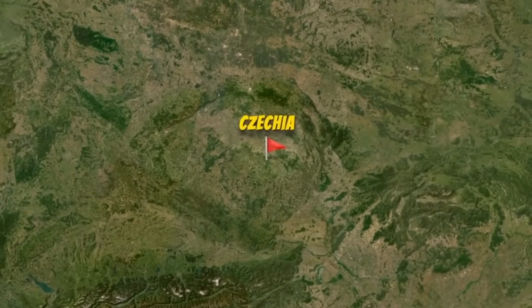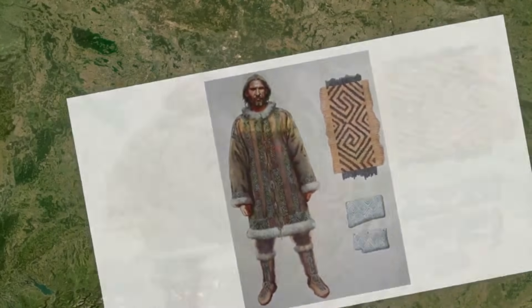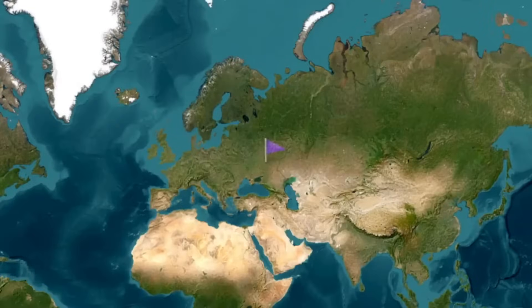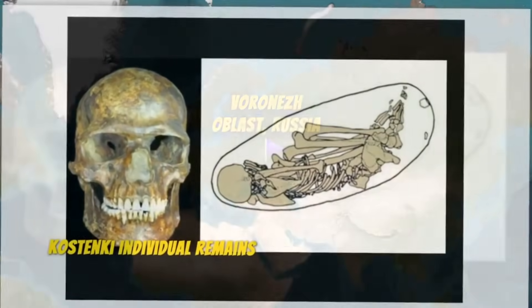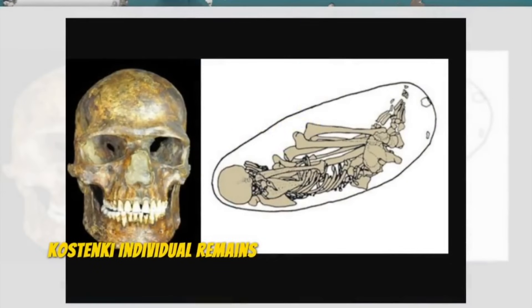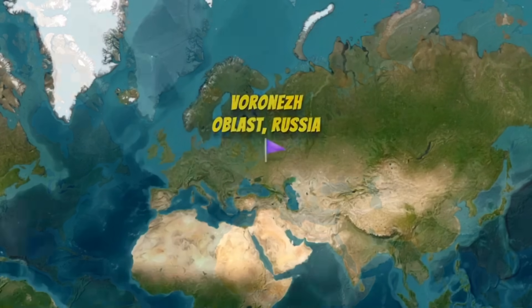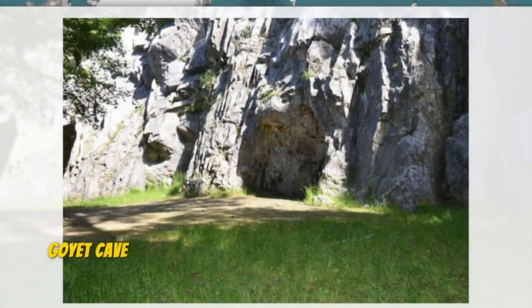The Gravettian and subsequent Epigravettian cultures, 35,000 to 15,000 years ago, represent crucial periods in European prehistory, yet genetic analyses have revealed perplexing discontinuities that point to the existence of now-vanished populations. High-coverage genomes sequenced from Kostenki and Goyet individuals dating to 35,000 to 30,000 years ago exhibit genetic signatures not fully aligned with any later European hunter-gatherer groups. The Goyet Q1161 individual, dated to approximately 35,000 years ago, presents particularly puzzling genetic characteristics.